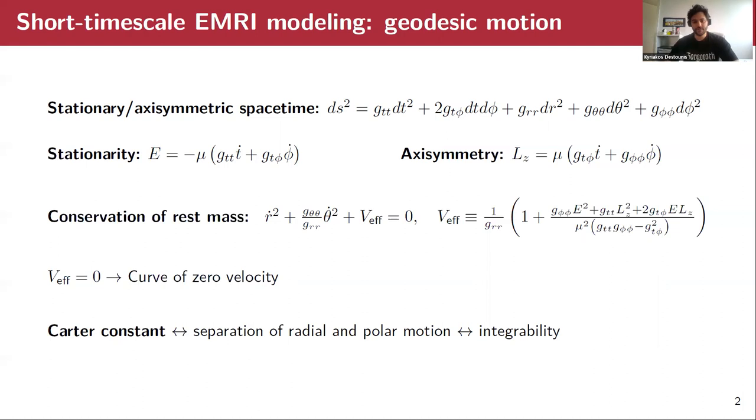So here we will assume geodesics at the short timescale level, and together with the conservation of the rest mass, which gives us a very nice constraint equation with an effective potential that depends on the energy, the angular momentum, and the metric tensor components, we have three constants of motions or integrals of motions. But our spacetime has four degrees of freedom, and luckily for integrable systems such as the Kerr spacetime, we also have the Carter constant, which allows us to separate the radial and polar geodesic motion, thus leading to integrability and absence of chaos.